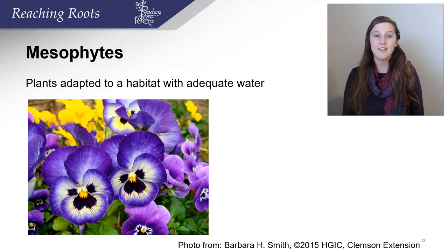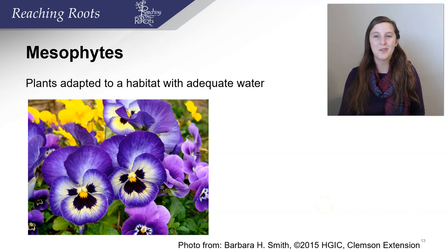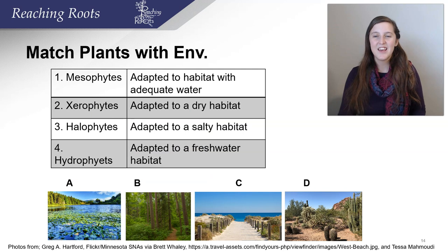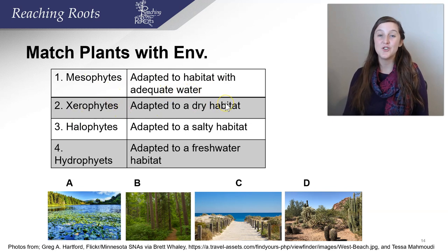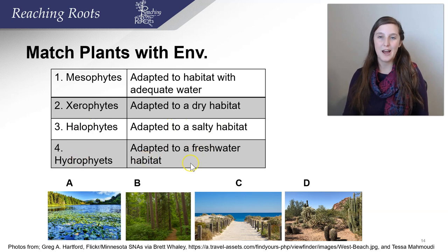The last type of plants we'll cover is mesophytes. These plants are adapted to habitats with adequate water — they're the plants that usually do quite well in our gardens because we spoil those plants. So let's review: mesophytes are adapted to habitats with adequate water; xerophytes are adapted to dry habitats, such as cacti; halophytes are adapted to salty habitats; and hydrophytes are adapted to freshwater habitats.